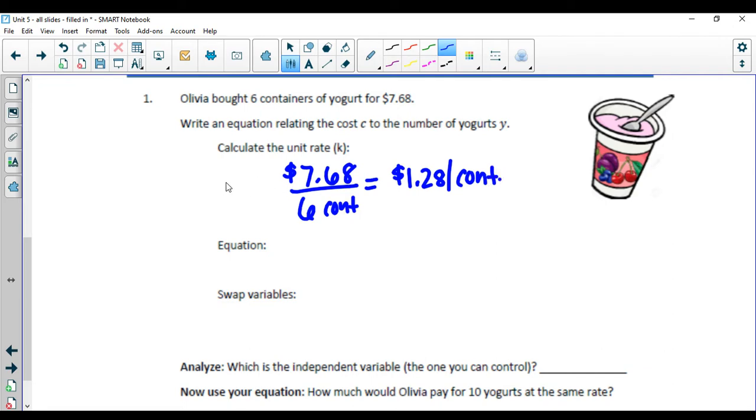This is our k value. And remember, we get k by doing y divided by x. So our equation is y equals 1.28x.